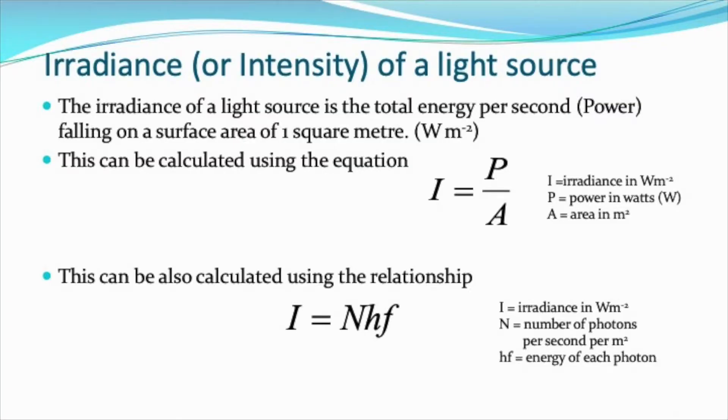Okay troops, today it's higher physics particles and waves unit, and it's irradiance. Irradiance is the total energy per second—that's the same as power—that falls on a surface area of one square meter. There's a relationship on your relationship sheet for that: irradiance is power over area, watts per square meter. And later on in the course you might also meet irradiance as the number of photons that fall per second per square meter as well.